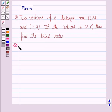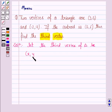Let's move on to the solution. We have to find the third vertex of the triangle. So let the third vertex of triangle be (x,y).